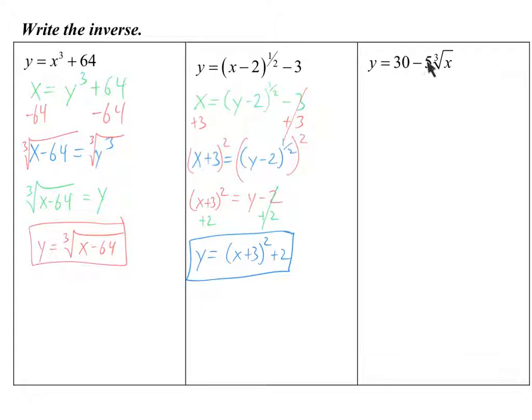So for this last one, first step on inverse, like always, is switch x and y. Now, I want to get y by itself. So I'm going to get rid of this 30. So I'm going to minus 30 from both sides. So I now have x minus 30 equals negative 5 times the cube root of y.